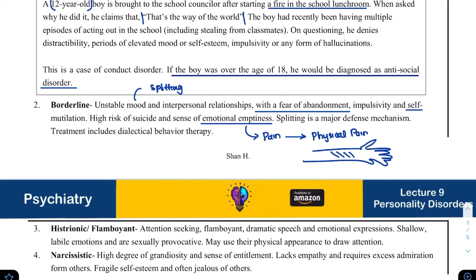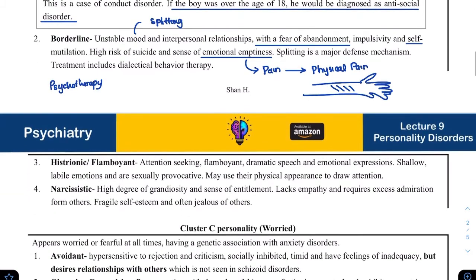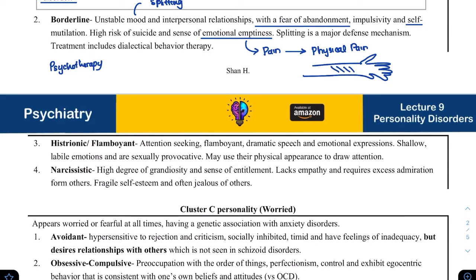When we talk about treatment for personality disorders, the number one treatment is psychotherapy — this is the only way to convince a person to change their personality. Medication can be used to manage associated symptoms, such as OCD symptoms being managed with medication.